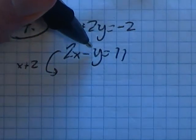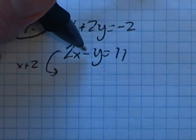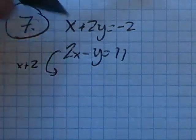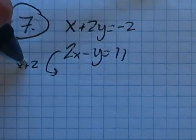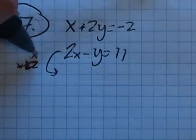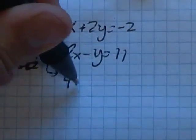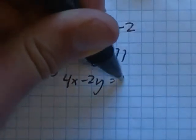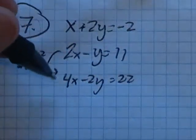So if I do that, this will be a 2y, this will be a negative 2y, that'll be a 2y, it'll cancel out when I add them together. So if I multiply this, I'm gonna rewrite that times two: 4x minus 2y equals 22. Remember to do it to both sides.